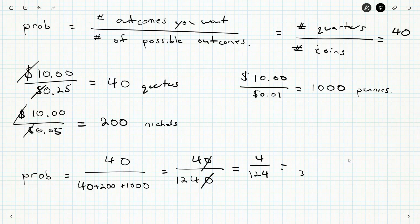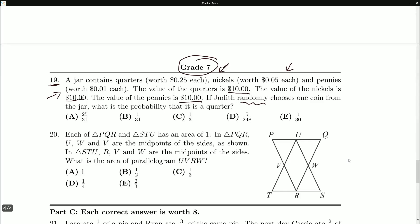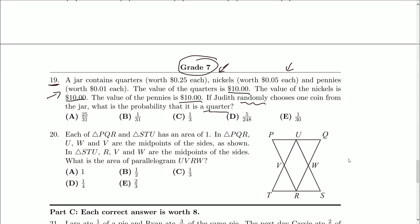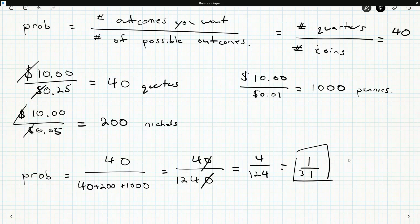Well, 4 goes into 12 three times. And 4 goes into 4 once. So I'm going to say the answer is 1 out of 31. That's the probability here. So the probability that it's a quarter, 1 out of 31. And that should be B.